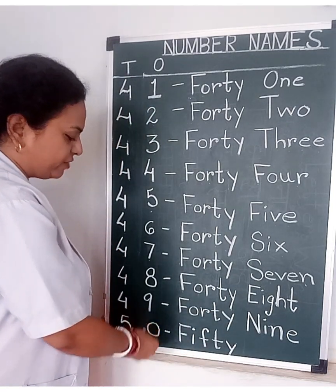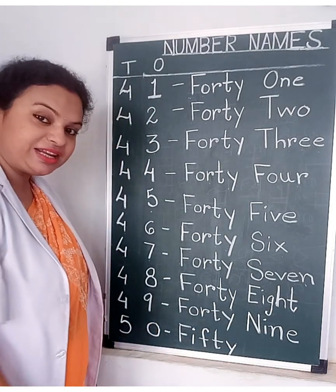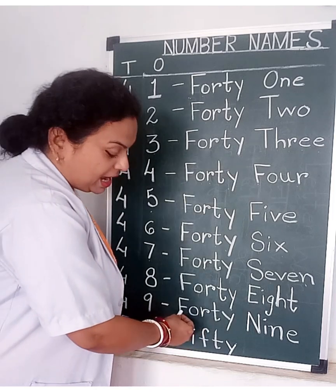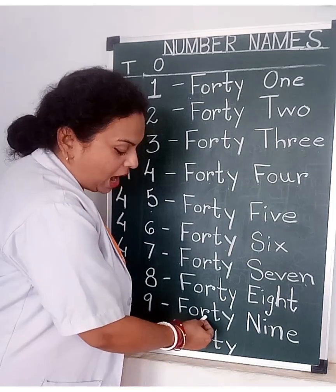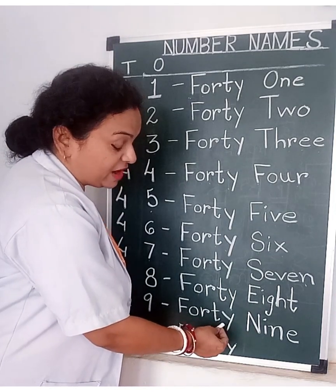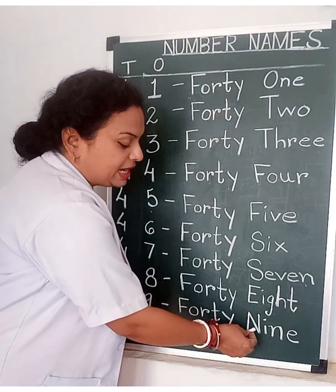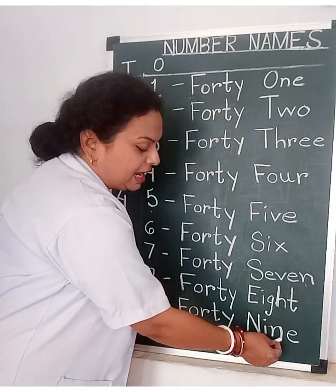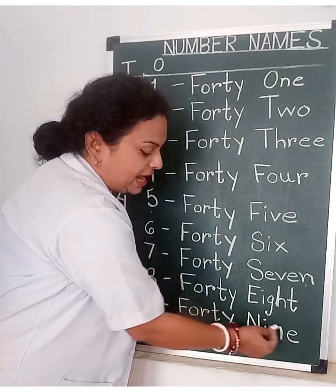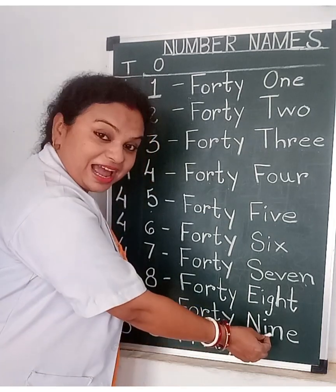4, 9 — 49. F, O, R, T, Y — FORTY. E, N, I, N, E — NINE. 49.